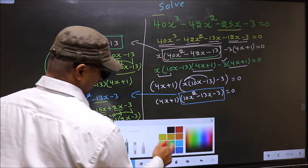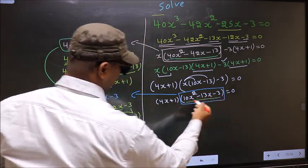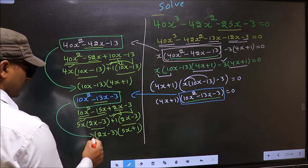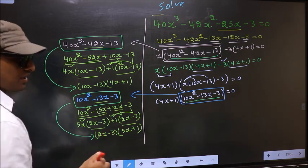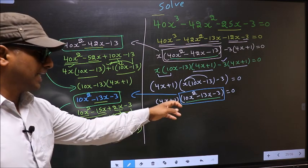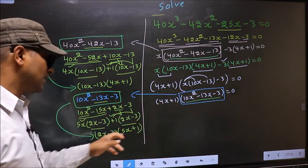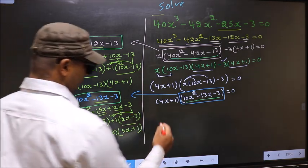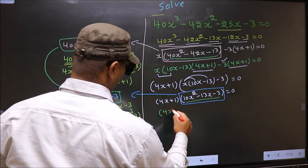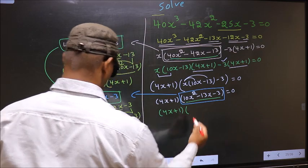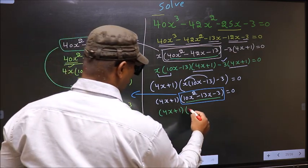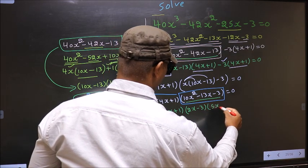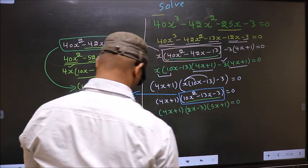Now, in place of this quadratic, you should replace this. So this equation will change to 4x plus 1, times 2x minus 3, times 5x plus 1, equal to 0.